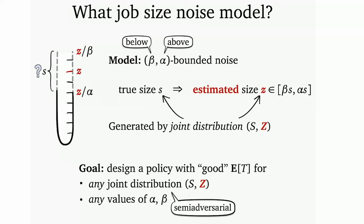It took finding a great set of collaborators to make that happen. The model of noise we use is what we call beta-alpha bounded noise — beta for below and alpha for above — so these are multiplicative factors. If your true size is s, your estimated size is between beta·s and alpha·s.